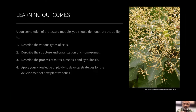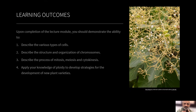Your learning outcomes for this particular lecture module are to describe the various kinds of cells — by various types, I mean the prokaryotic, eukaryotic, and within eukaryotic, the plant and animal cells. You have to describe the structure and organization of chromosomes, which is the hereditary material that carries information. Describe the process of mitosis, meiosis, and cytokinesis.